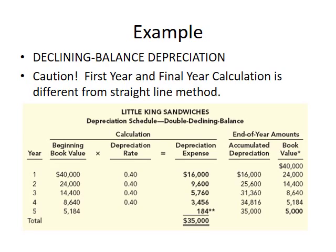In year two, the beginning book value is the ending book value from year one — $24,000. We apply $24,000 × 40% = $9,600 depreciation expense. We debit depreciation expense $9,600 and credit accumulated depreciation $9,600. Total accumulated depreciation increases to $25,600 and book value decreases to $14,400.